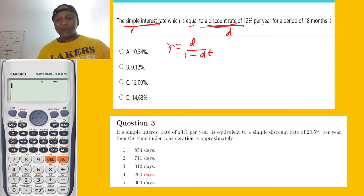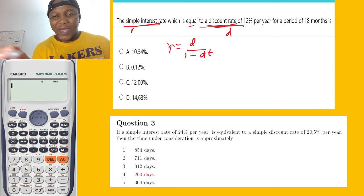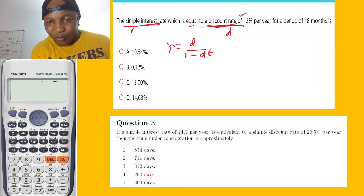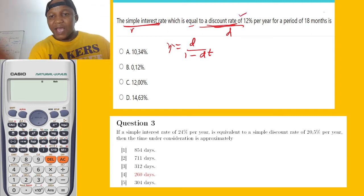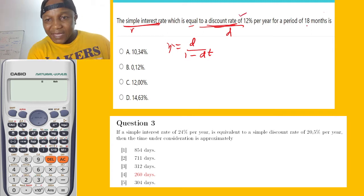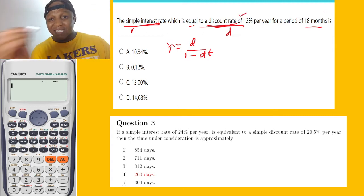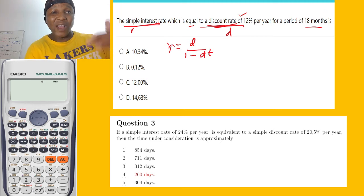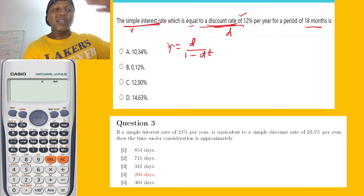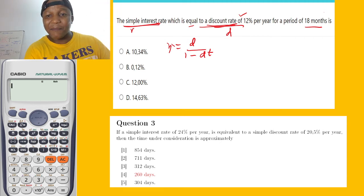The formula says: I equal to D over 1 minus DT. This is the formula used to solve questions involving the relationship between simple interest rate and discount rate. Now, what do we have? The time is 18 months, but we have to change to years because the time must be in years.